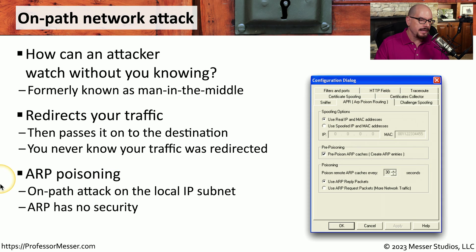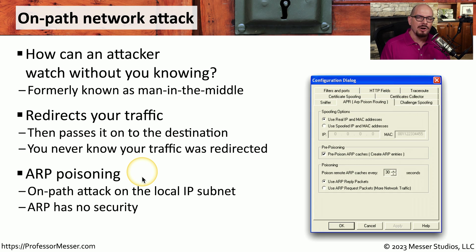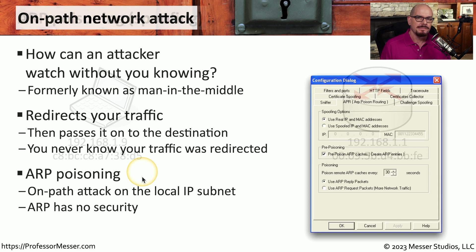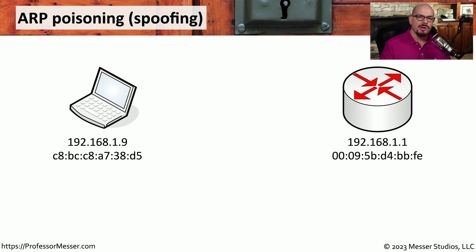One type of an on-path attack is ARP poisoning. ARP poisoning occurs on a local IP subnet, so the attacker would need to be on the same subnet as the victim devices. Because ARP doesn't have any type of security or encryption associated with it, this is a relatively easy attack to implement. Let's see how an attacker might use ARP poisoning, or ARP spoofing, to monitor traffic between two devices.